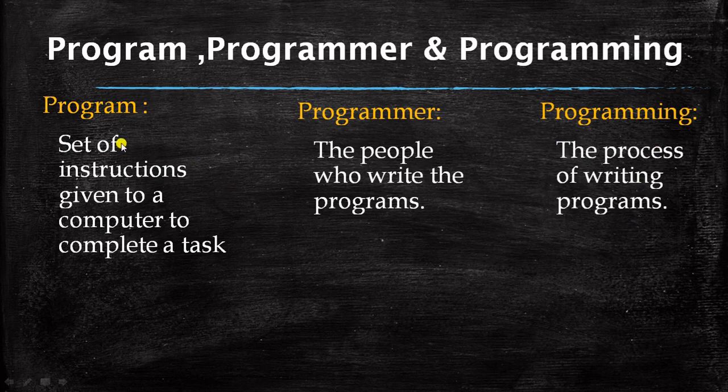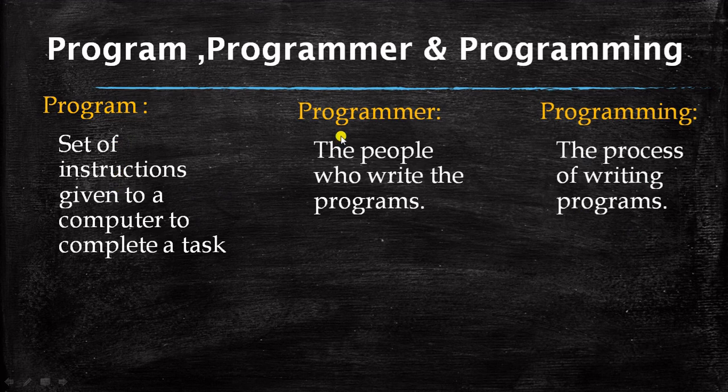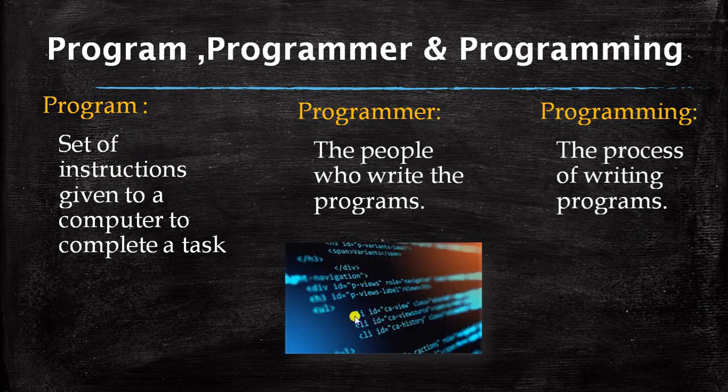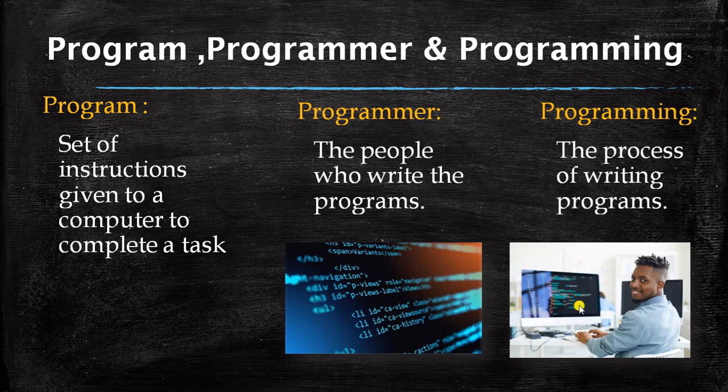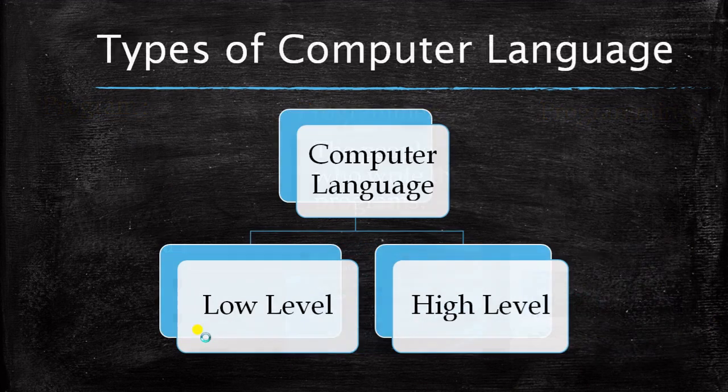So program is what is being written, the instructions. Programmer the person who writes it. And programming the process through which programmer makes a program. So if simple way these are the programs and this person writes it. That's why he is the programmer. And he is doing all this stuff. That entire thing will be called as programming.